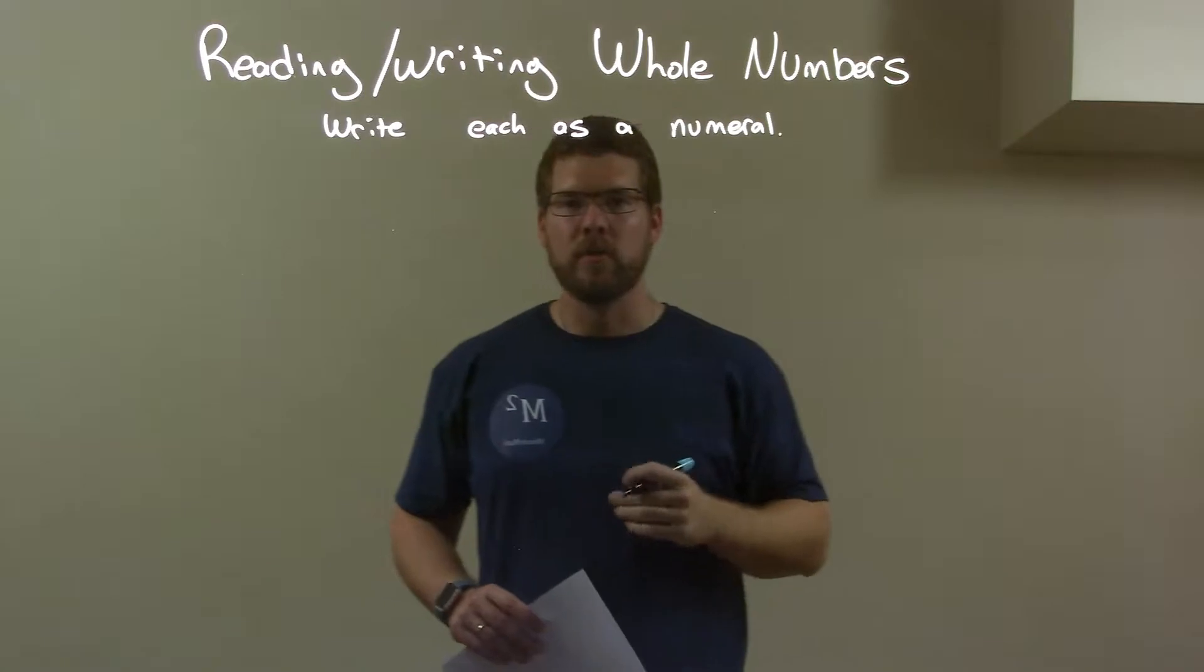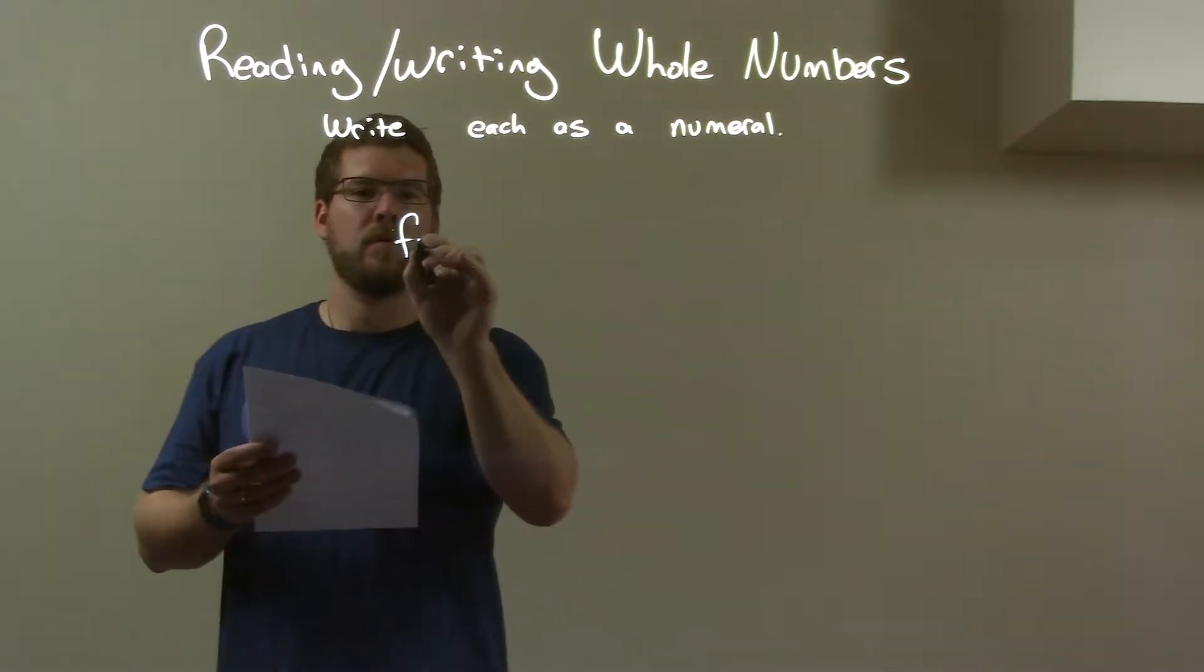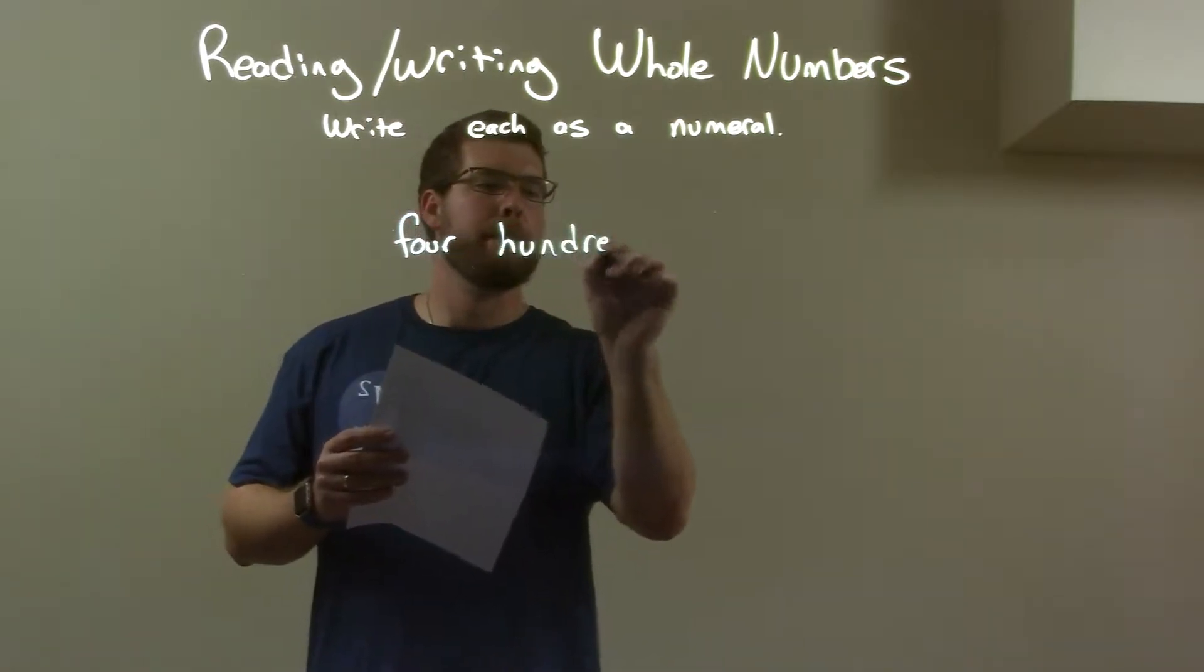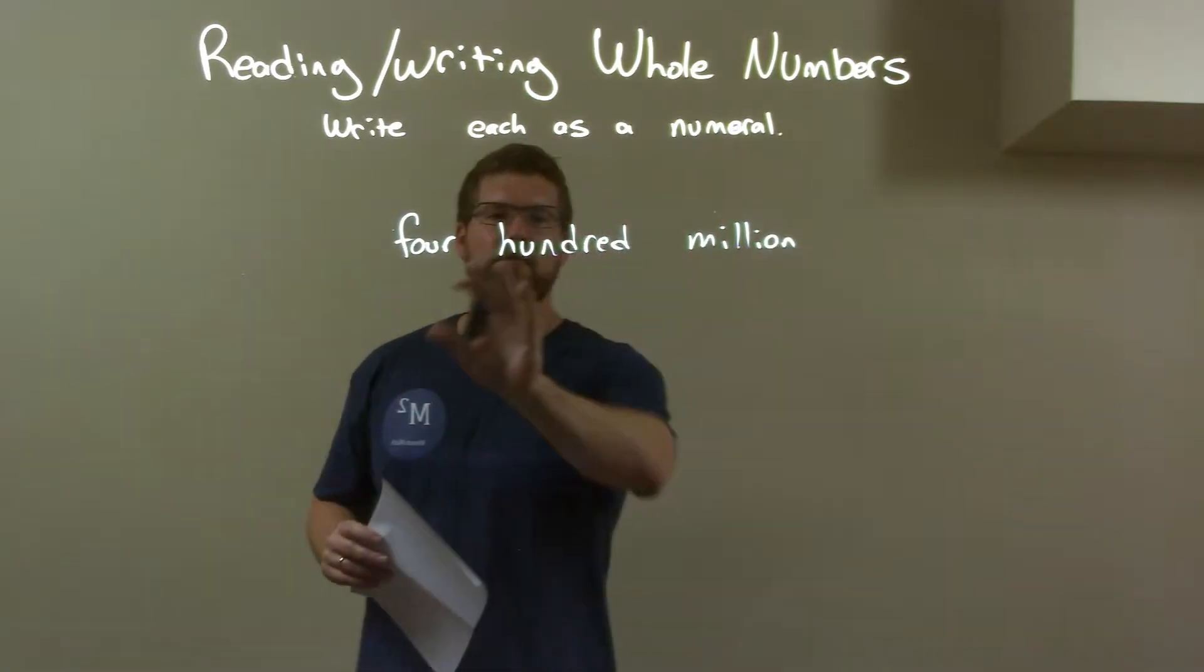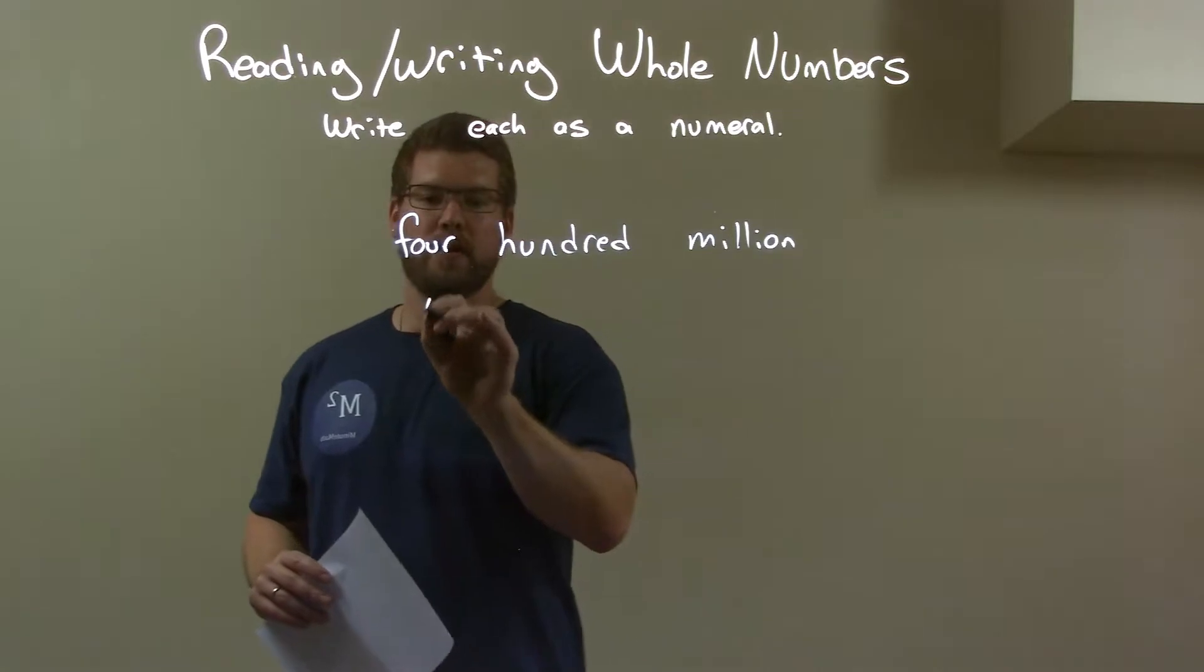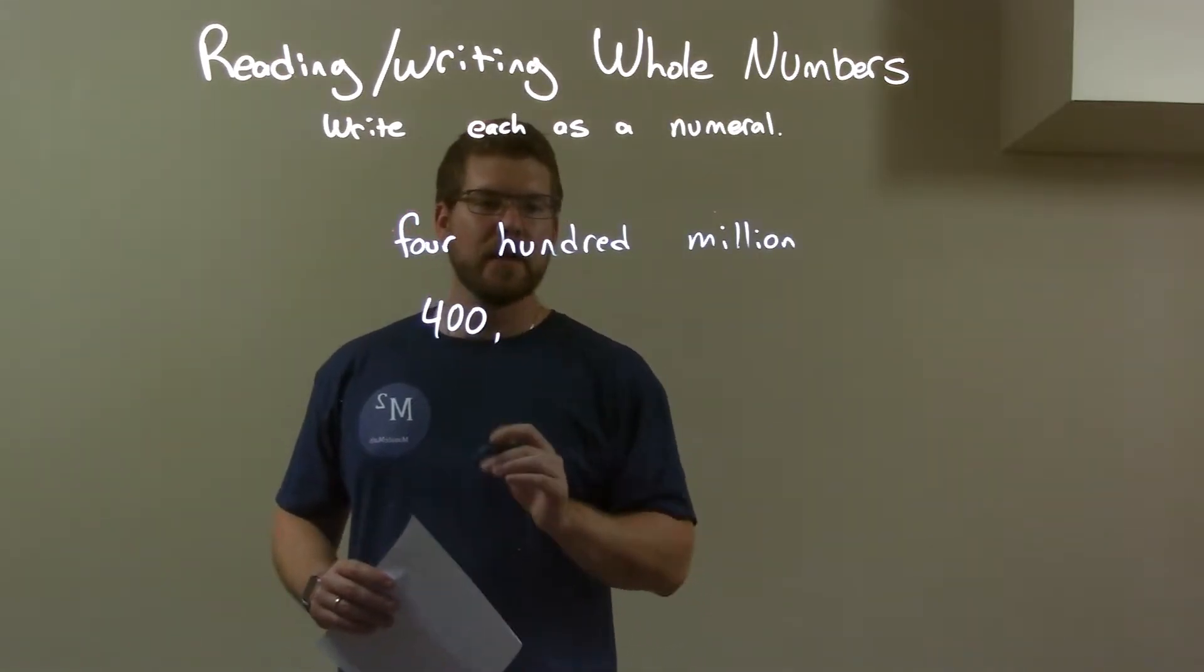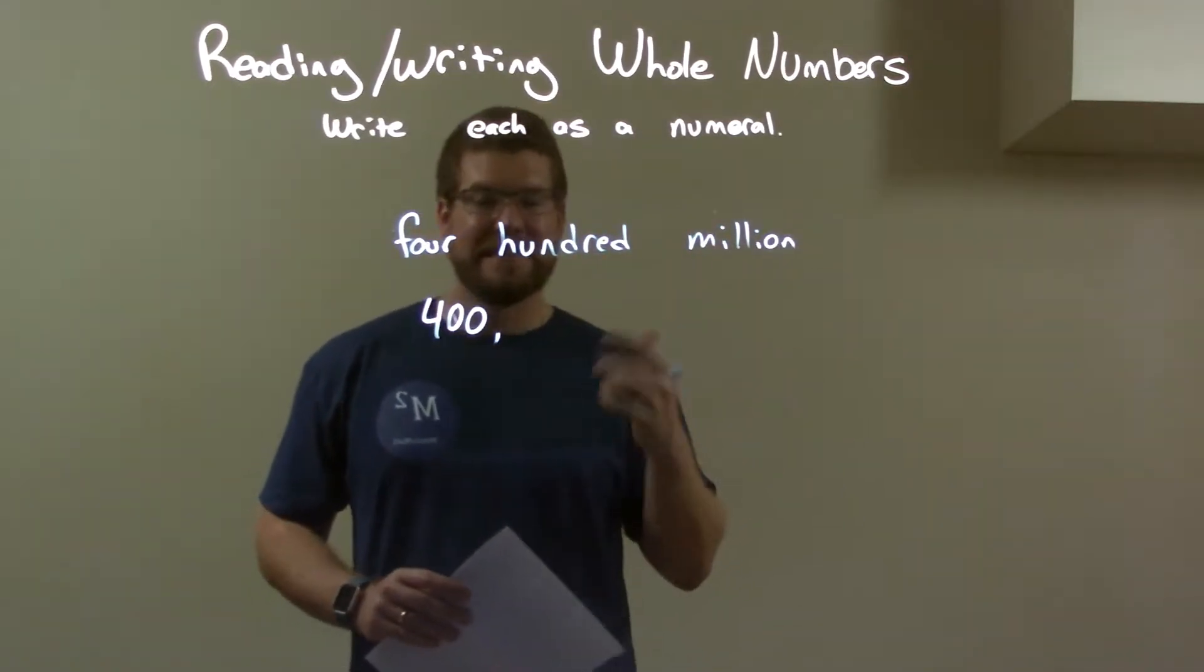Or write each as a numeral. So if I was given this number, 400 million. So we have 400 million here. Well, first we need the 400. So we have 400 right there. Then the million is six places afterwards. And since there's nothing left, that's just zero.